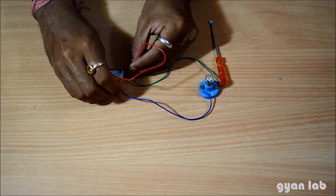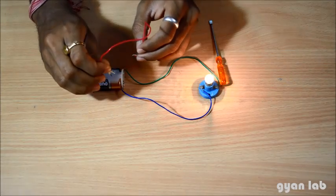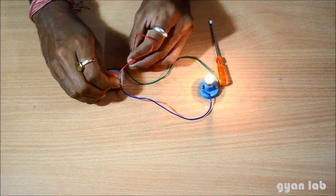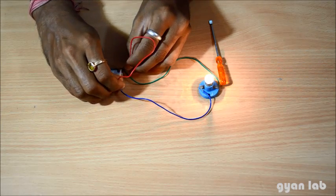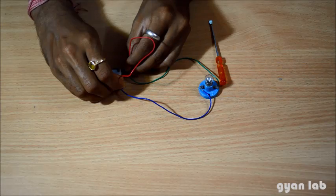You see, the bulb is not glowing. The moment I remove it, it again starts glowing. The moment I connect it back, the two ends of the connecting wire, it stops glowing. So this is short circuit.